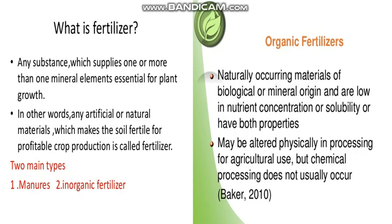Plants use minerals to make important food substances. We know that plants absorb minerals from the soil to make food substances. They absorb these minerals from the soil through their roots. As these minerals are used up, more must be added to the soil to replace them.